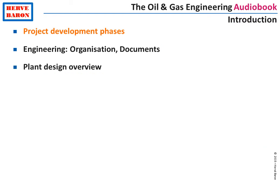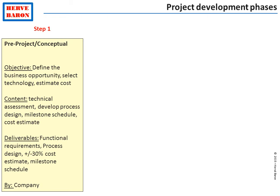What happens when an oil and gas company decides to develop a project? First of all, the company planning, business planning, or pre-project department reviews and performs a technical and economic assessment of this new development: what business benefits will it bring, what is the technical feasibility, what is the cost, what is the rate of return, and so forth.